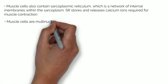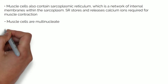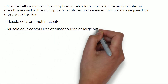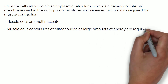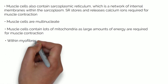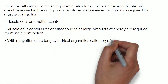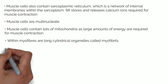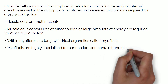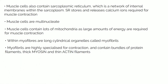Muscle cells are multinucleate, which means they contain lots of nuclei. Muscles contain lots of mitochondria as large amounts of energy are required for muscle contraction. Within myofibres are long cylindrical organelles called myofibrils. Myofibrils are highly specialised for contraction and contain bundles of protein filaments — thick myosin and thin actin filaments.